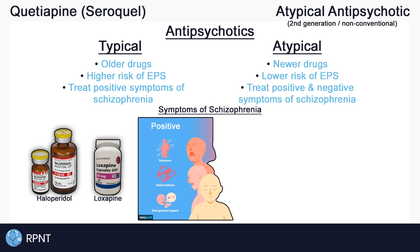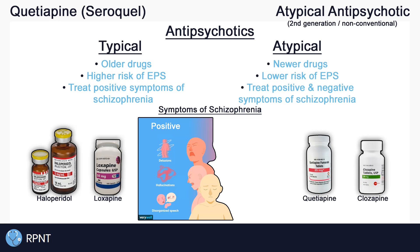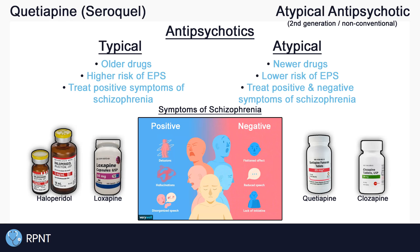Atypical antipsychotics, like quetiapine, are the newer and generally safer options that have a lower risk of causing EPS. Atypical antipsychotics are also used to treat psychosis and behavioral problems. However, atypical antipsychotics can treat both positive and negative symptoms.